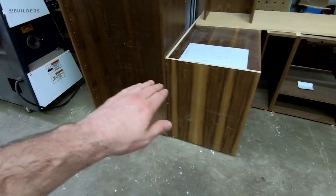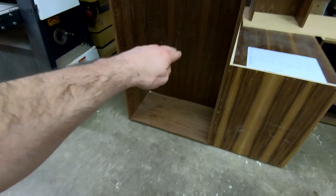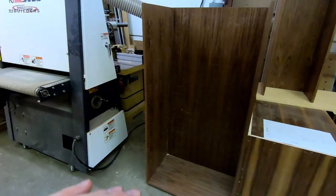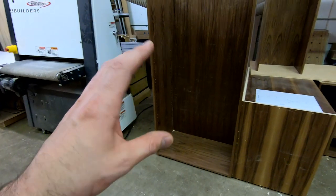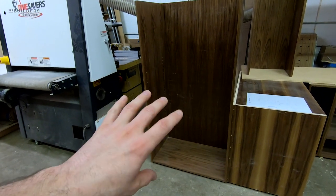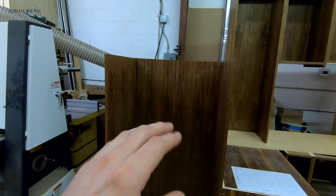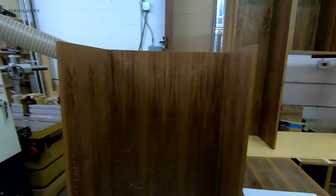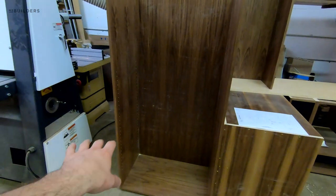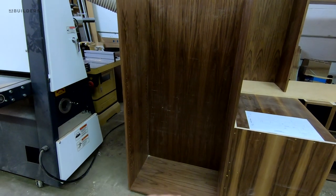This cabinet actually becomes sort of an appliance garage/pantry cabinet where it gets flipped upside down. The counter runs all the way through there and plenty of adjustable shelving above there.